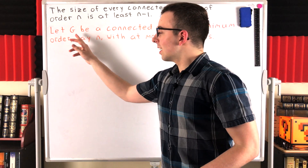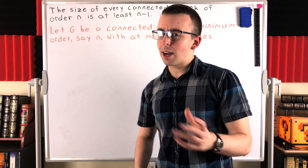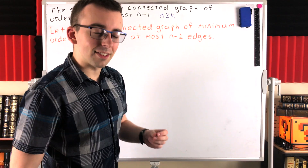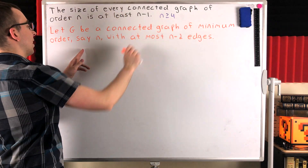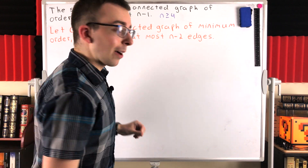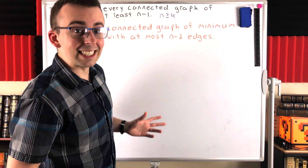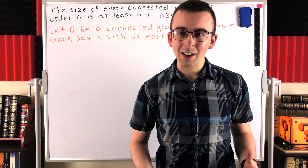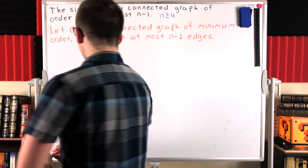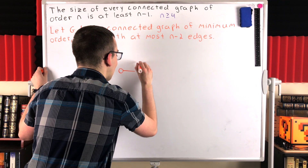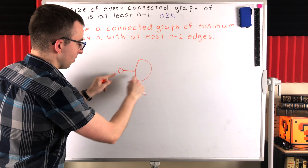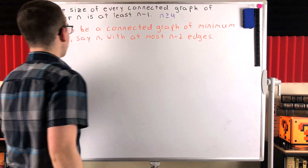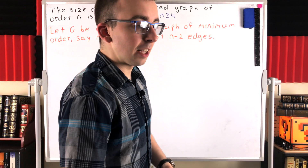To find a counterexample more minimal than this one, we'll have to delete a vertex from g so we can have a counterexample with fewer vertices, contradicting the fact that g is a minimum counterexample. But remember, to contradict our claim a graph has to be connected, so we can't just delete any vertex from g — we don't want to accidentally delete a cut vertex. So what type of vertex is never a cut vertex? That would be an end vertex, a vertex of degree one. You can never disconnect the graph by deleting a vertex of degree one.